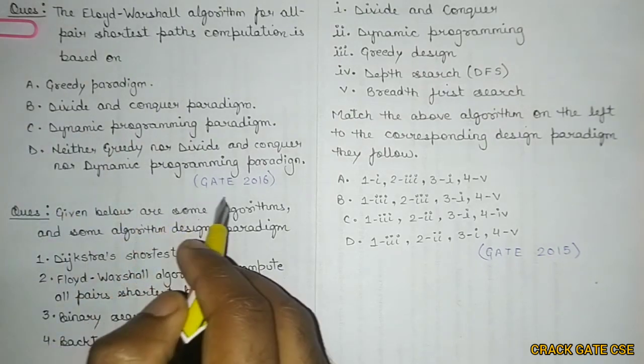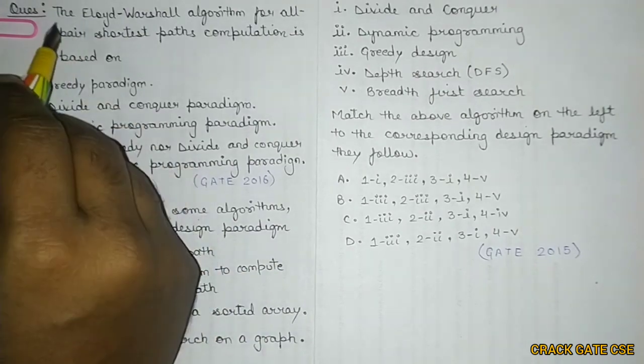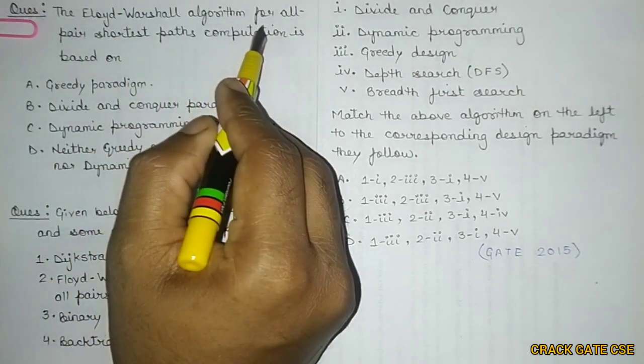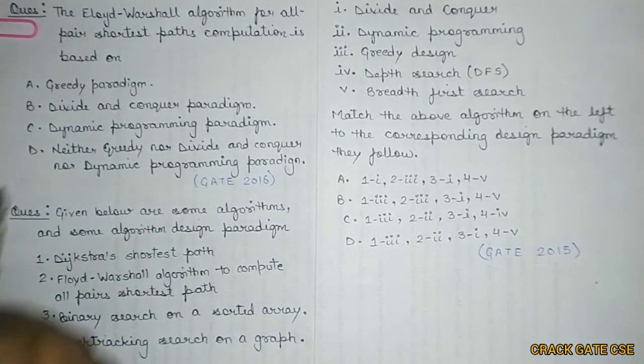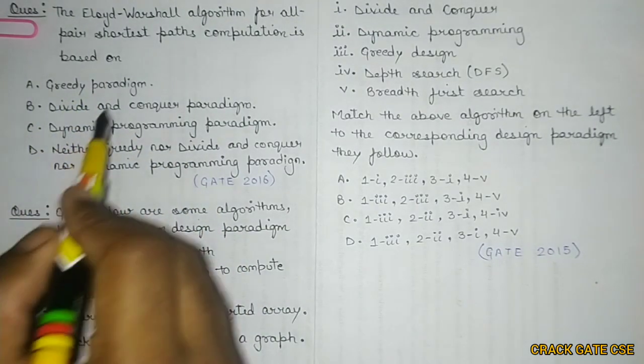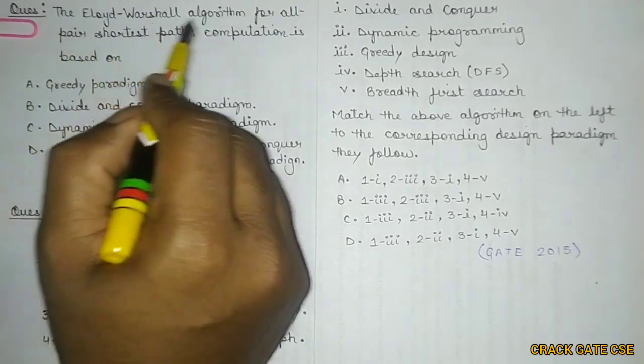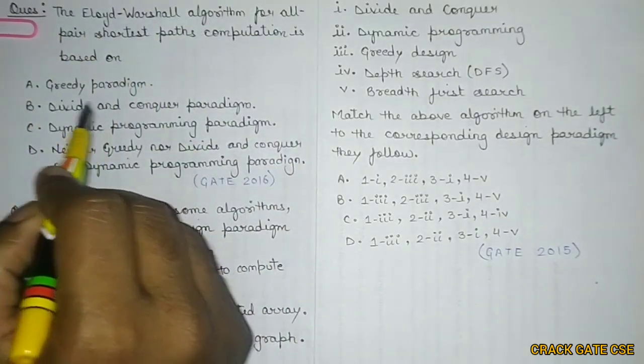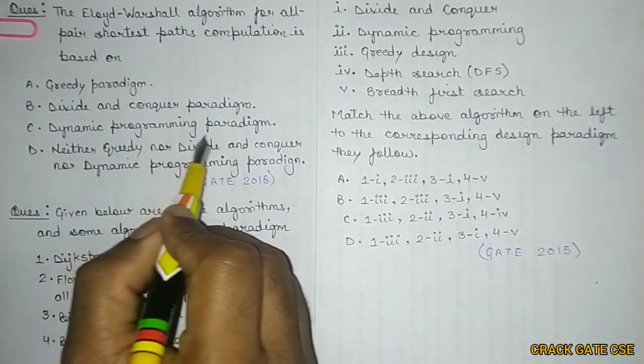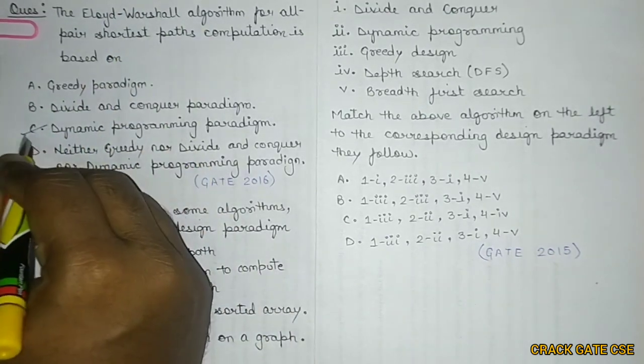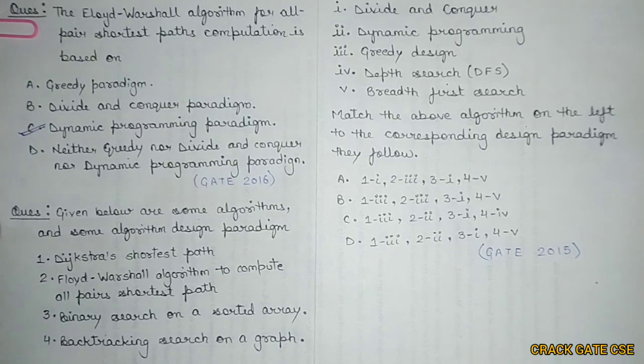The first question came in GATE 2016. The question is: the Floyd-Warshall algorithm for all-pairs shortest path computation is based on which of these paradigms? Four paradigms are given: one is greedy. We know that Floyd-Warshall does not depend on greedy paradigm; it is based on the dynamic programming paradigm. So the right answer is dynamic programming paradigm.